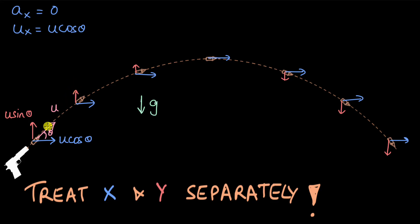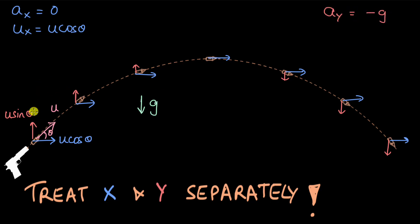For the y direction, we know the initial vertical component and the acceleration involved in the motion. The acceleration ay is minus g, since we take the upward direction as positive and gravity acts downward. The initial vertical component of velocity uy is u sin theta.